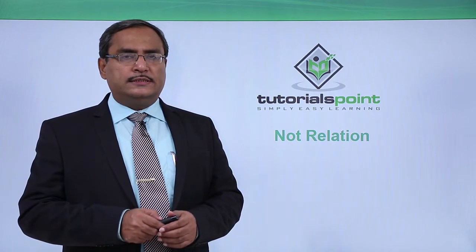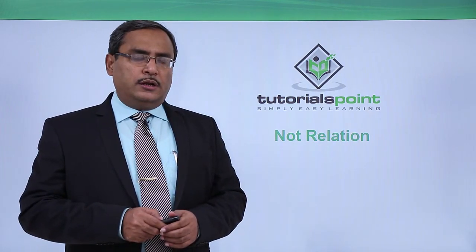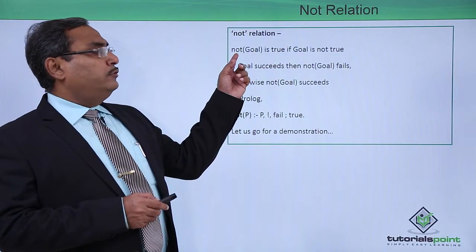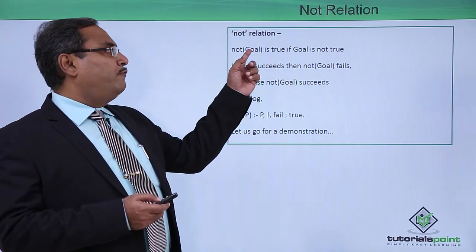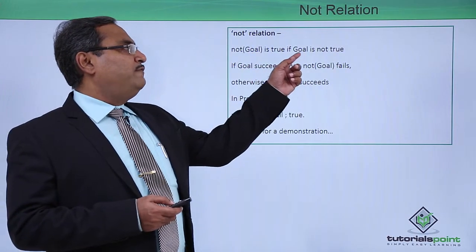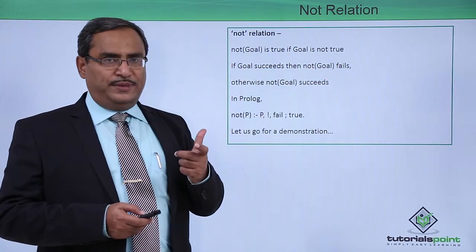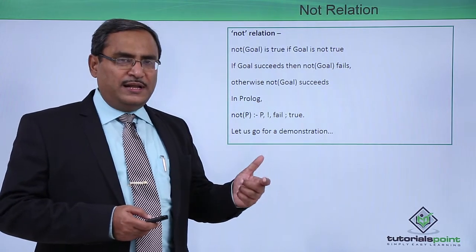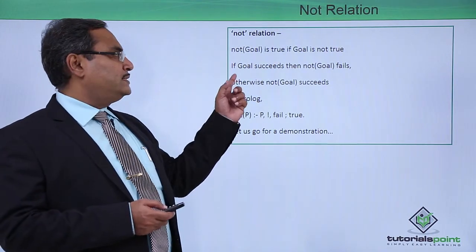In this session, we are going to discuss not relation. What is the not relation here? Not relation indicates that not of goal is true if goal is not true. That means if the goal is failed, if the goal is false, then not of goal will be true in this case.